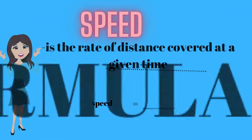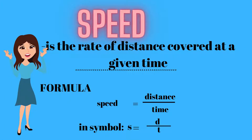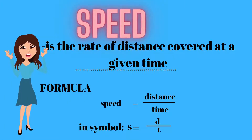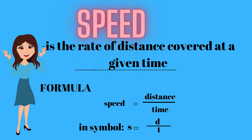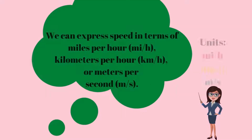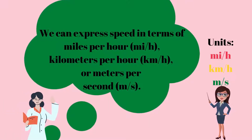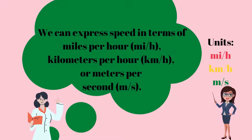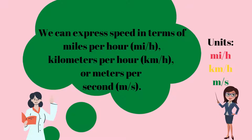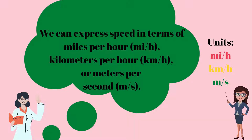Speed is the rate of distance covered at a given time, with the formula speed equals distance divided by time. In symbol, S equals D over T. We can express speed in terms of miles per hour, kilometers per hour, or meters per second — those are the units for speed.